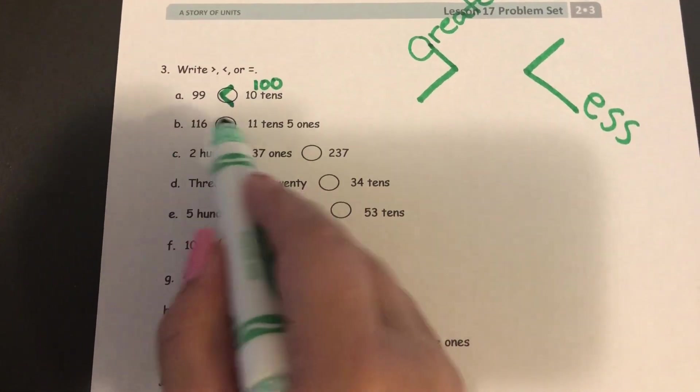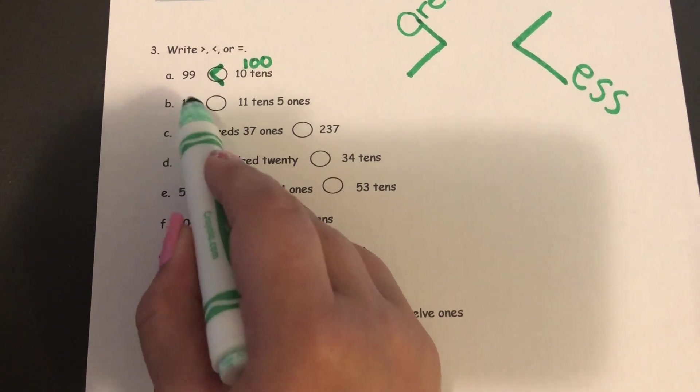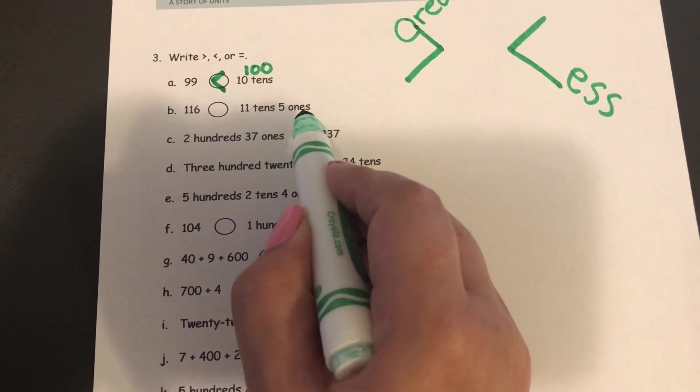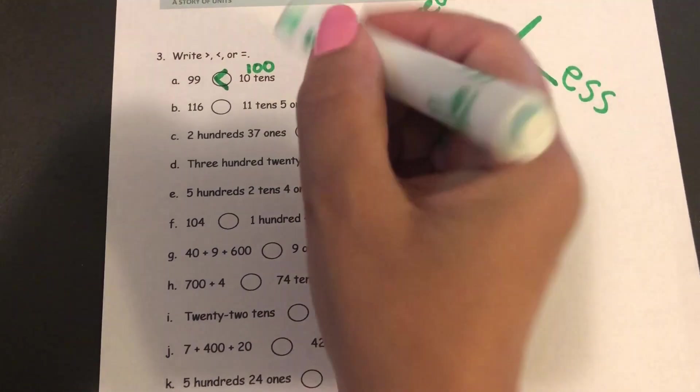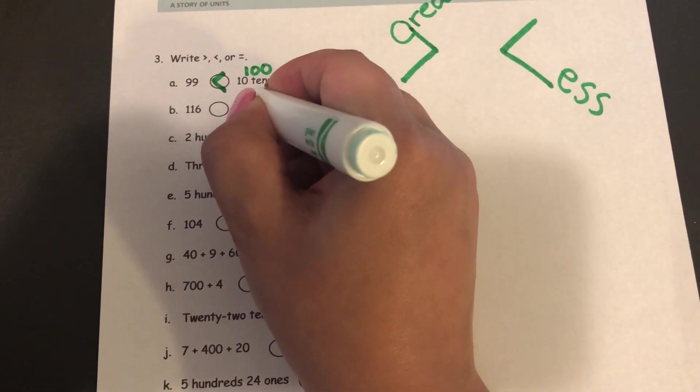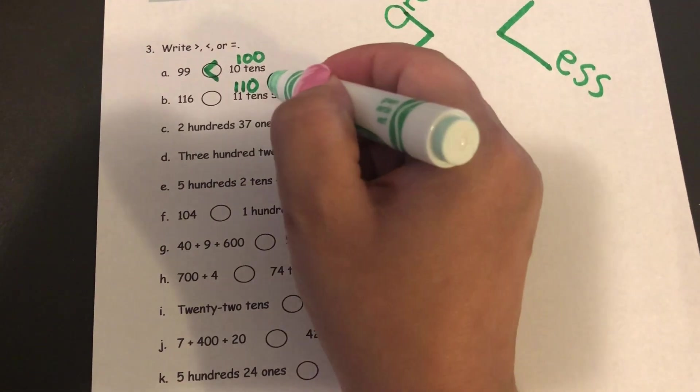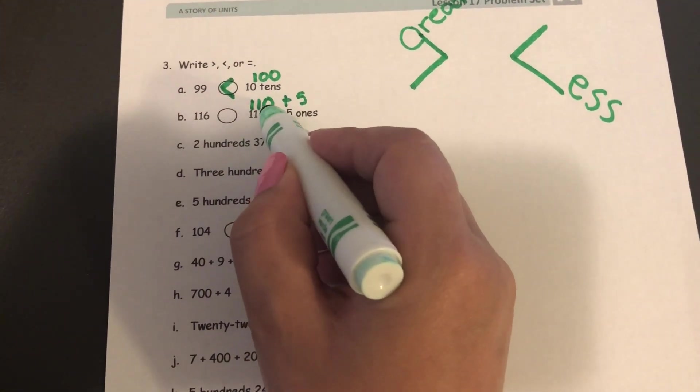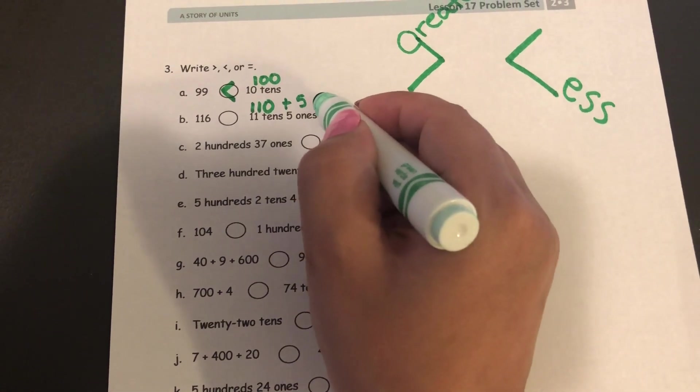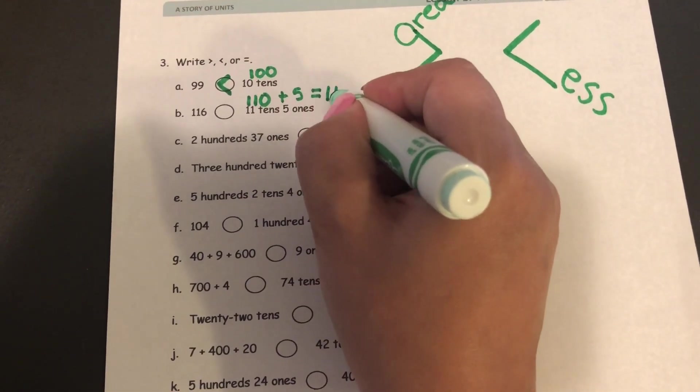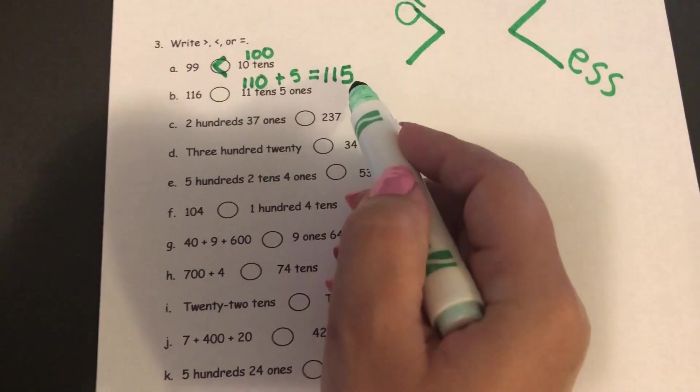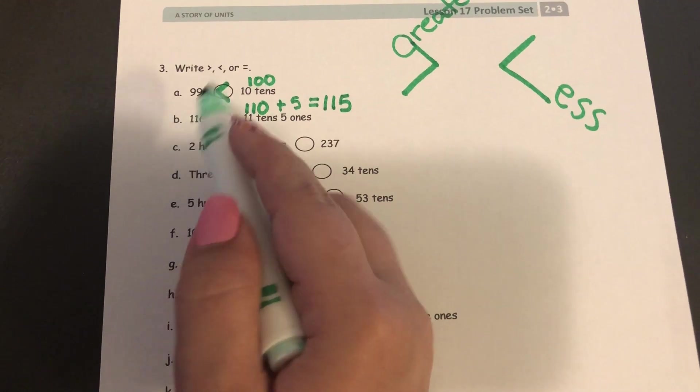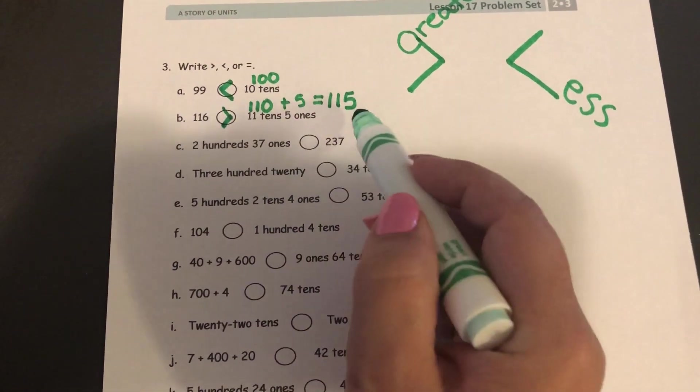All right, I'll go to my next one. 116. It's already written in standard form and this one is eleven tens five ones. Well, I know eleven tens is going to be 110, and then I want to add in five ones. So I know that ten plus five is 15. If I add in the hundred I've got 115, and I'm comparing it to 116. I know that 116 is greater than 115.